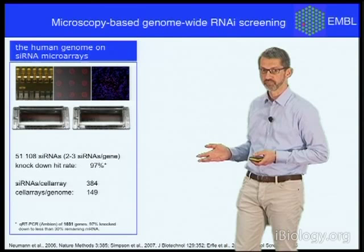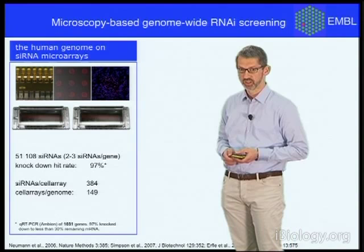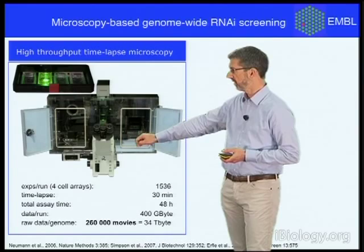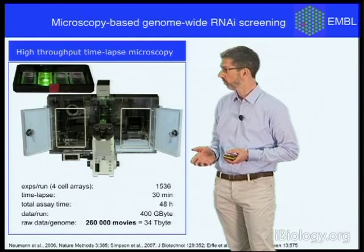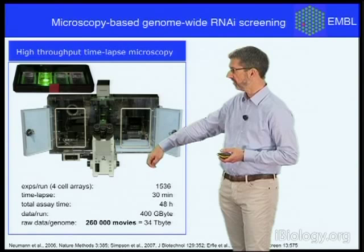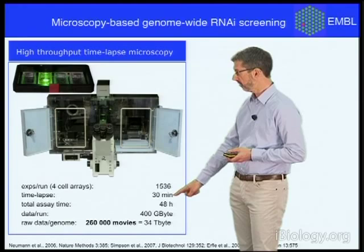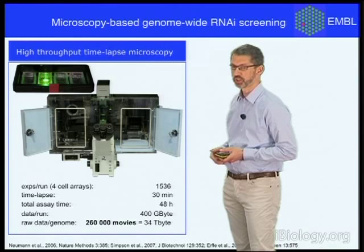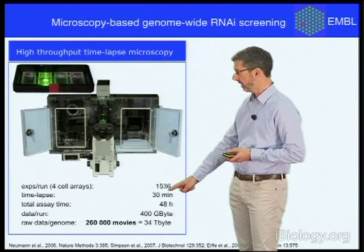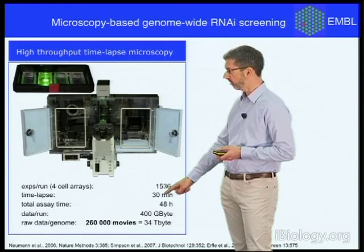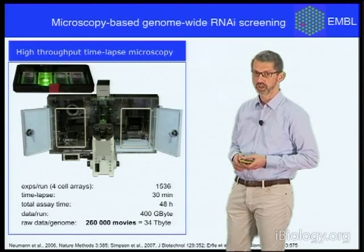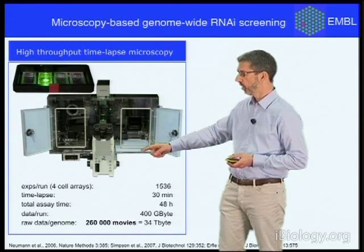The next piece of technology needed — the focus of this lecture — is a high-throughput microscope. We need a microscope which is fully incubated so the cells are dividing as happily as in the incubator, and the stage of which can accommodate up to four of these microarrays, allowing us to image about 1,500 gene silencing experiments in parallel. We record movies for two days with a time resolution of 30 minutes, so the one-hour event of cell division is never missed, resulting across the entire genome in a dataset of 260,000 movies or 34 terabytes of digital data.